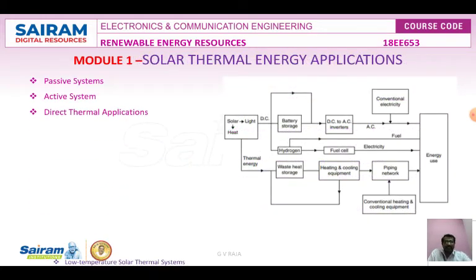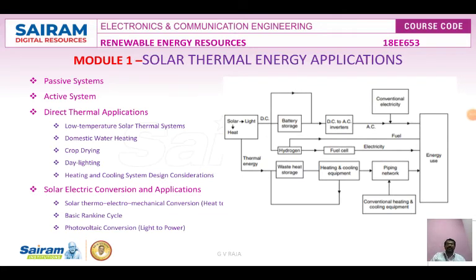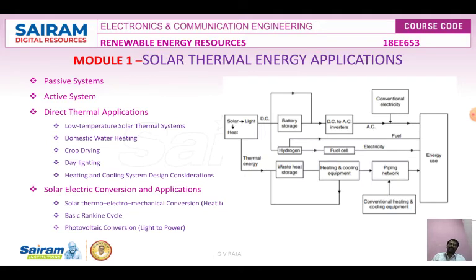Next is solar thermal energy applications. The energy from the Sun can be converted into usable forms of energy for multiple purposes. The technology consists of two systems: passive systems and active systems. A passive system collects energy without the need of pumps or motors — the orientation of materials and construction of the collectors allows them to absorb, store, and use solar radiation.